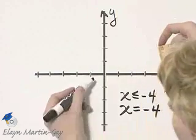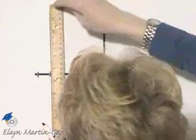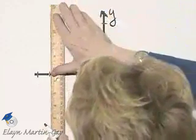So let's graph our boundary line: negative 1, negative 2, negative 3. Here is negative 4, so I'm drawing a solid boundary line.